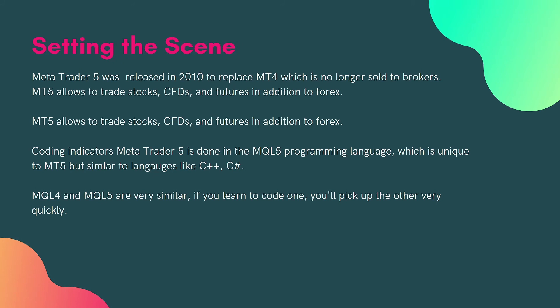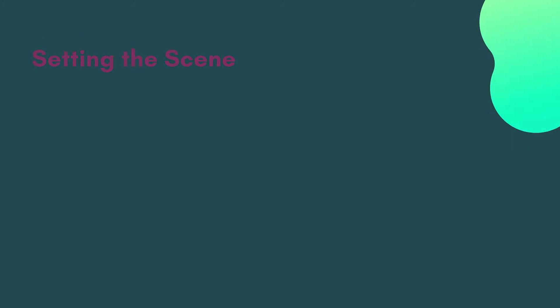MQL4 and MQL5 are very similar. If you've learned one, you'll pick up the other very quickly. There are some differences worth knowing in how data is structured across the two, and you have to be able to navigate that. But the basics are very similar, and if you've done the MQL4 course with Toolkit for Traders, you'll find a lot of it is very familiar.